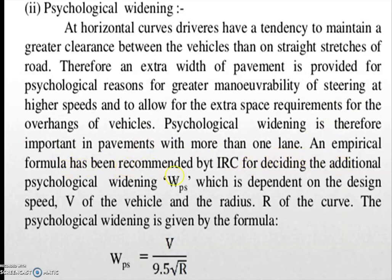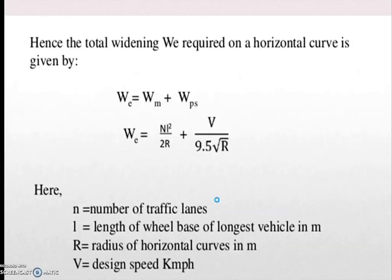An empirical formula has been recommended by IRC for deciding the additional psychological widening, denoted as WPS, which is dependent on the design speed V of the vehicle and R the radius of the curve. The formula is: WPS = V / (9.5√R), where V is the velocity of the vehicle and R is the radius of the curve. Hence, the total widening required on a horizontal curve is given by WE = WM + WPS, where WM is mechanical widening and WPS is psychological widening.